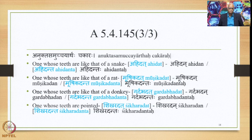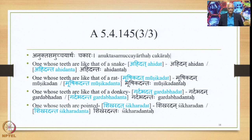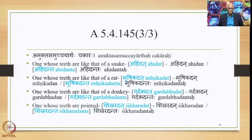The commentators say that the mention of Ch in this particular Sutra is also indicating that there are some other words not included in this list which also undergo the same process. There are examples like one whose teeth are like that of a snake — Ahidat and Ahidanta; one whose teeth are like that of a rat — Mooshikadat and Mooshikadanta; one whose teeth are like that of a donkey — Gardabhadat and Gardabhadanta; and finally one whose teeth are pointed — Shikhiradat and Shikiradanta.